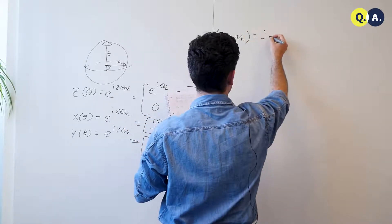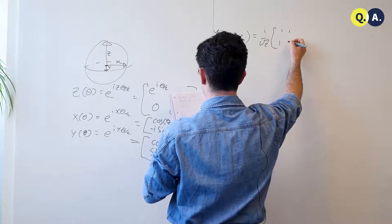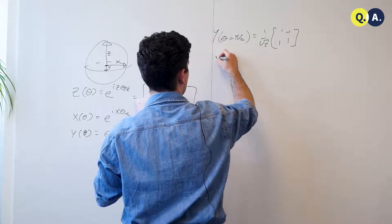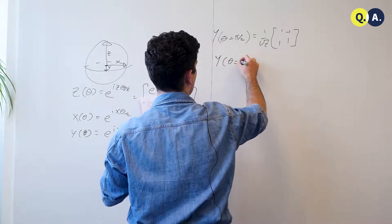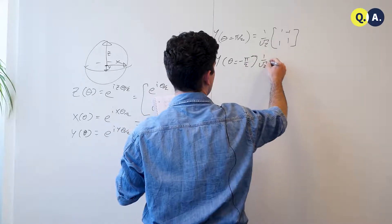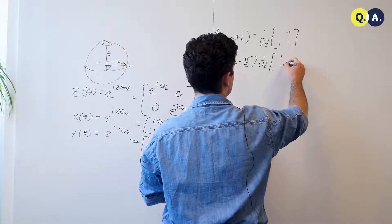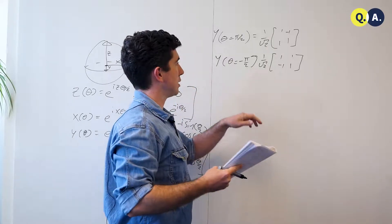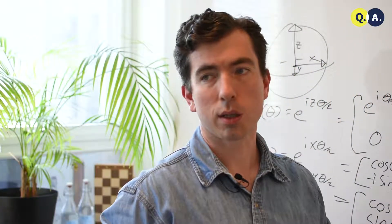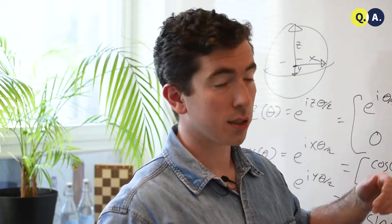And that's going to give me 1 over root 2, 1, 1, minus 1, 1. Y theta equal to minus pi by 2 is going to give me operations that look like 1, minus 1, 1, 1. You may recognize these as being quite similar to the Hadamard matrix that changes us from the computational basis into the plus minus basis, and that's by design.